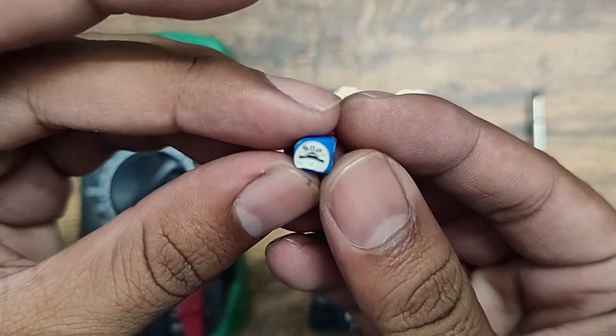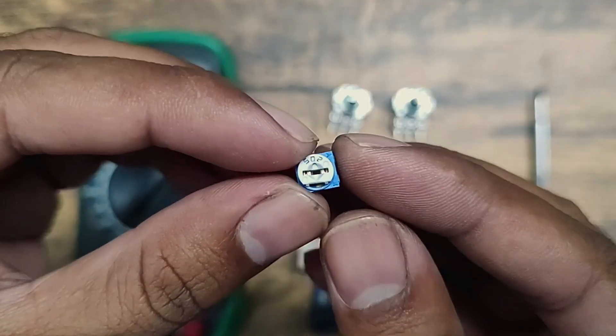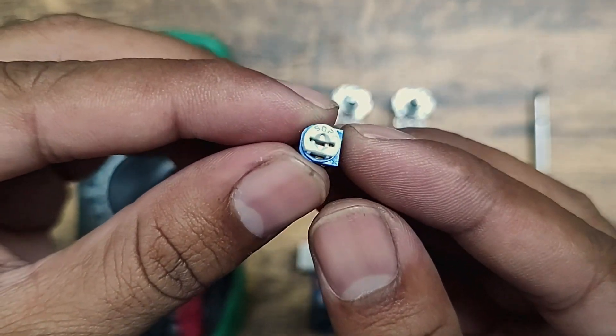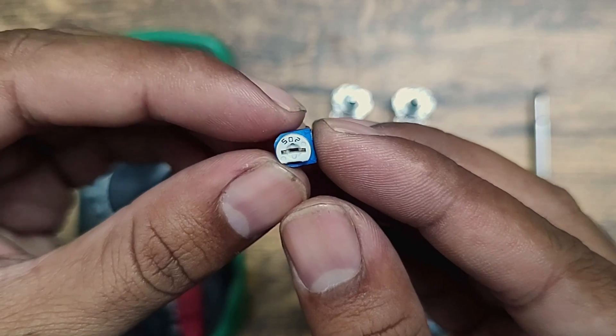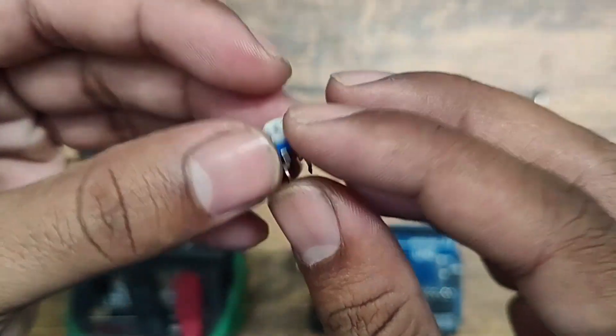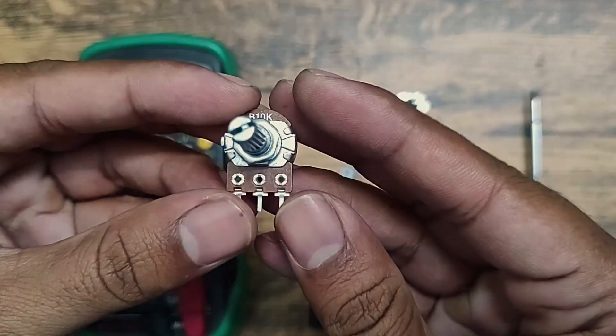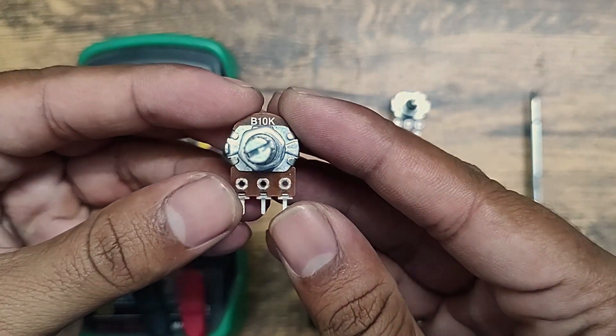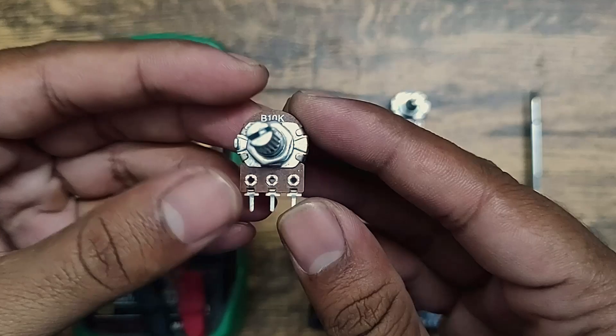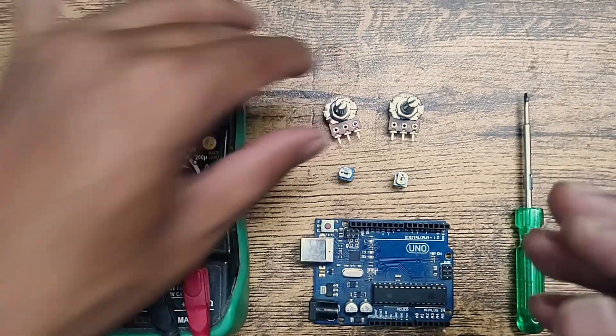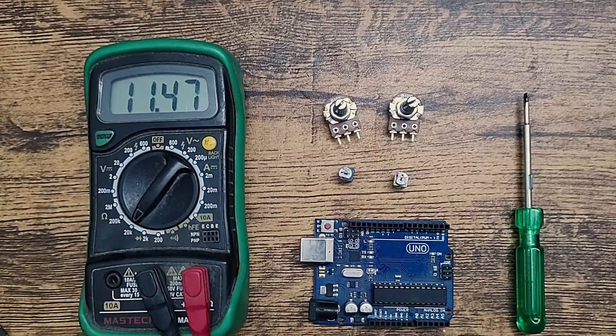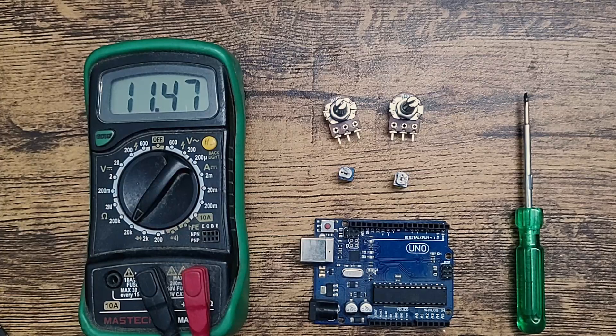It is 5k, so we can adjust its value from 0 to near 5k. And for this bigger one we can adjust the resistance value from 0 to 10k. Now I will show you how it works.